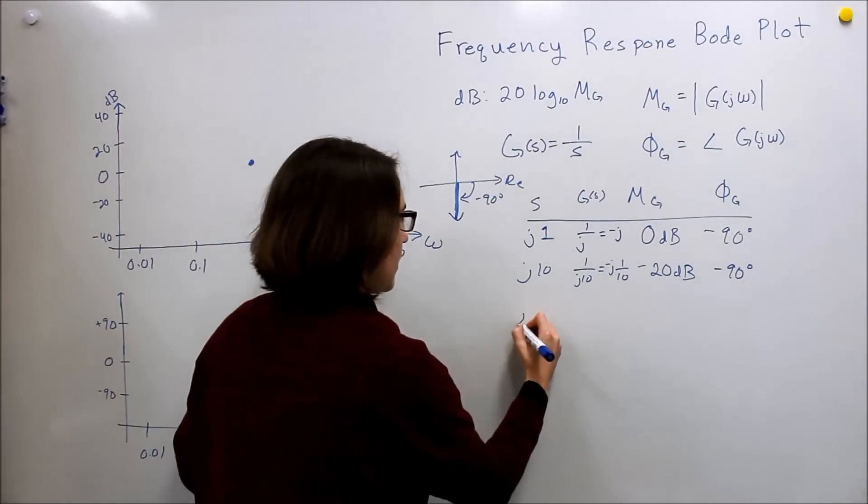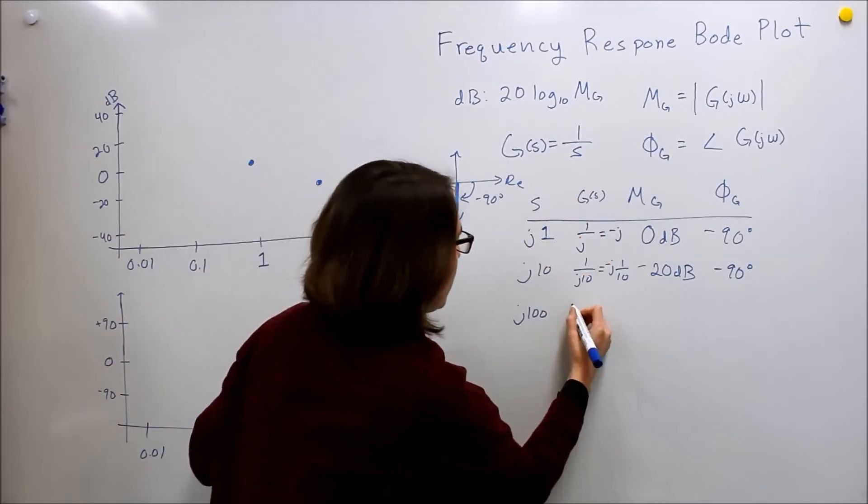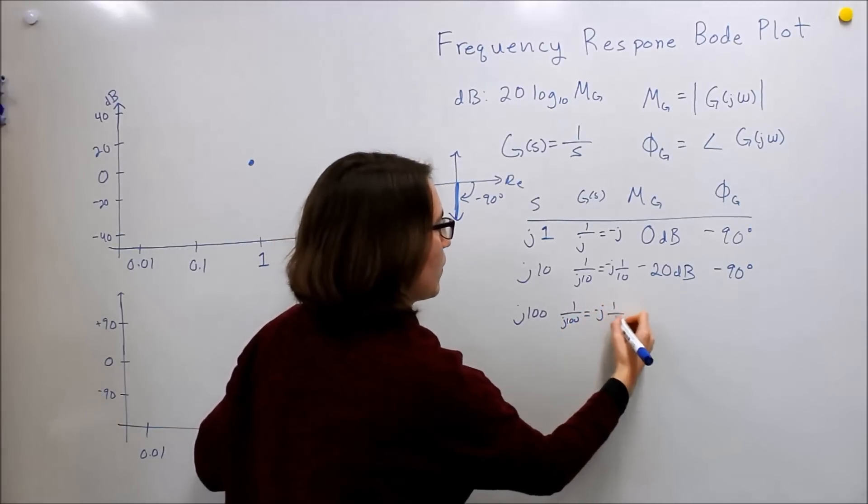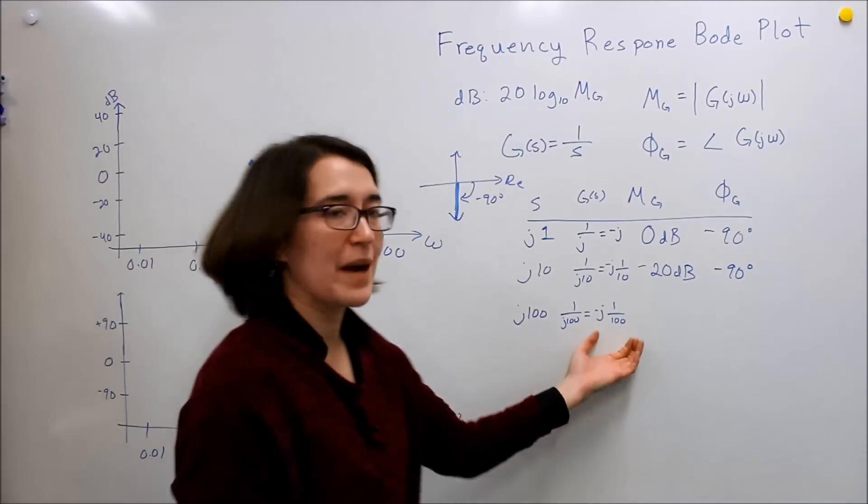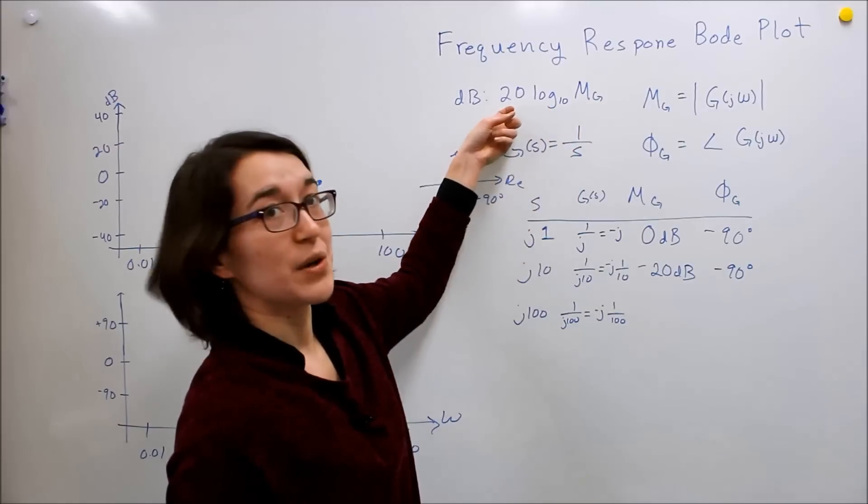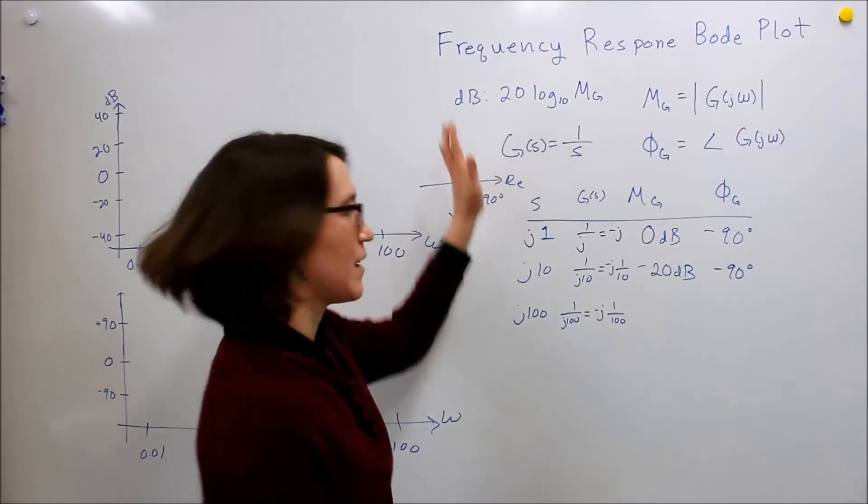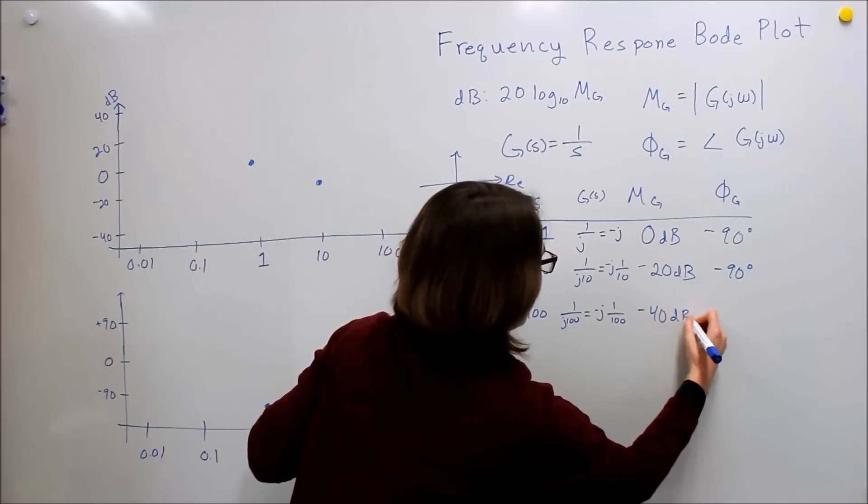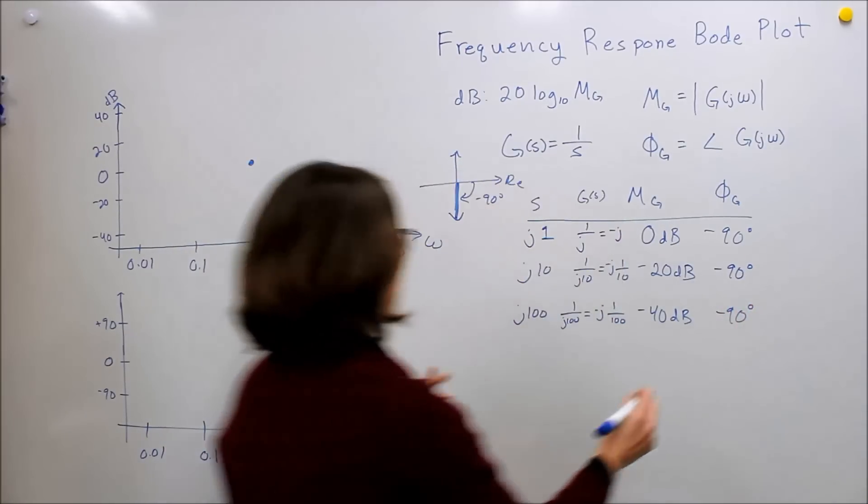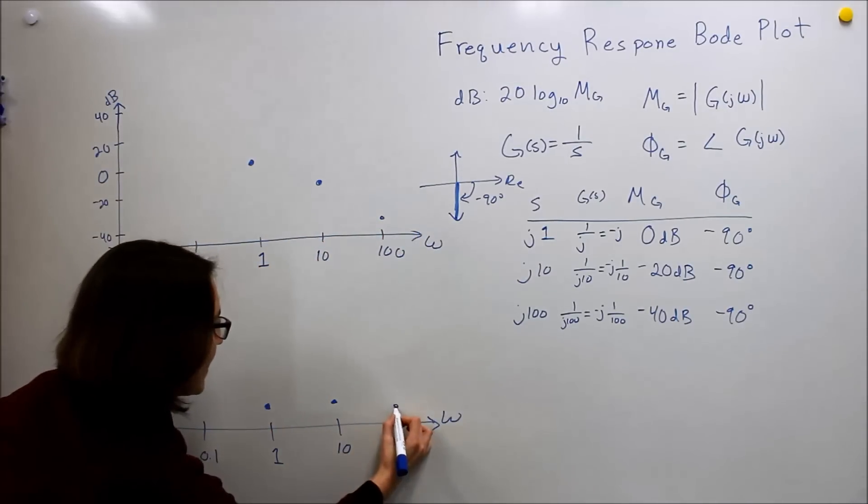So let's look at 100. So here we have J100 as S. We put that into our G of S. We get 1 over J100 is equal to negative J1 over 100. So if we look at the magnitude of that, it's 1 over 100. Take 1 over 100, put it into our dB equation here. Here, we'll get log of 1 over 100 is negative 2, negative 2 times 20 is negative 40. And again, our angle, same. Negative 90. Hopefully, you're also seeing a trend here, so we're at negative 40 and negative 90 here.